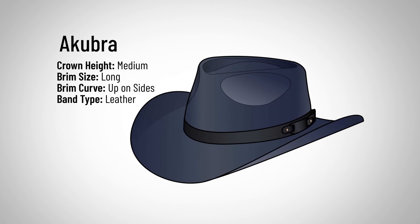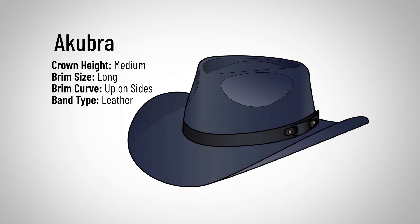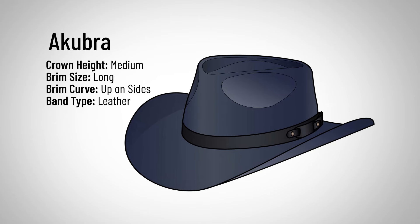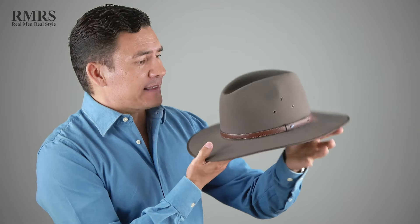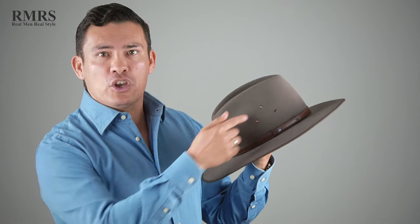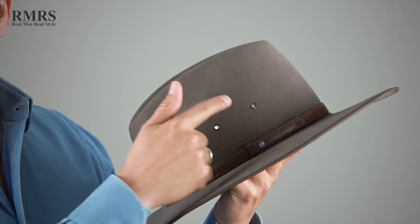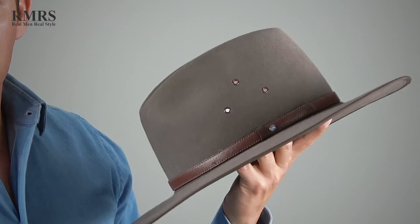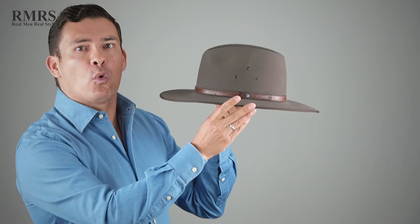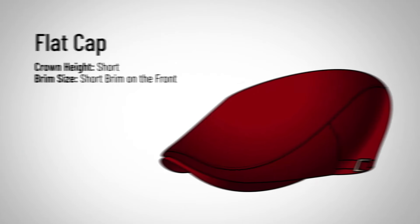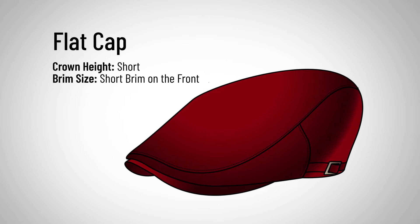Very similar to the western hat, we've got the Akubra — the Australian version. I think it's a beautiful hat. I have one that I picked up when I was in the Blue Mountains — got that little opal right there. What you're going to see on the Akubra are the vents on the side, similar to western hats, but the Akubra is going to be worn more flat. Now let's talk about flat caps.